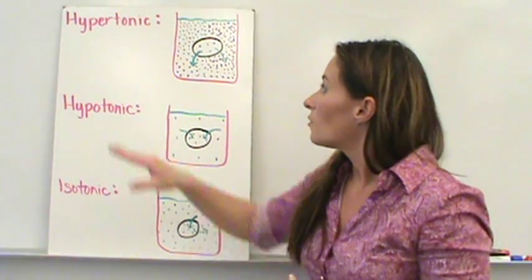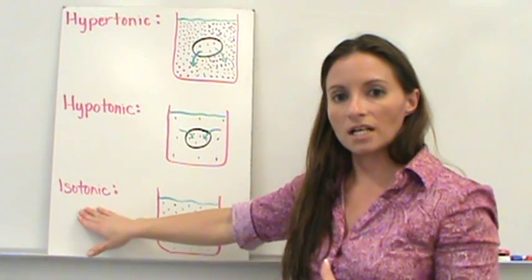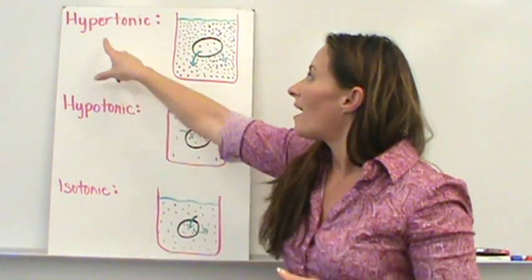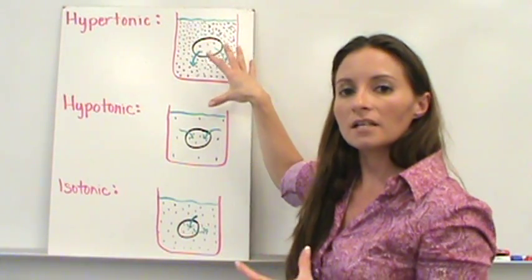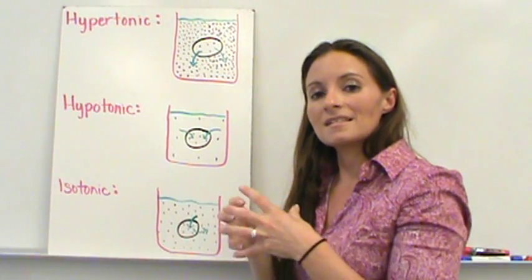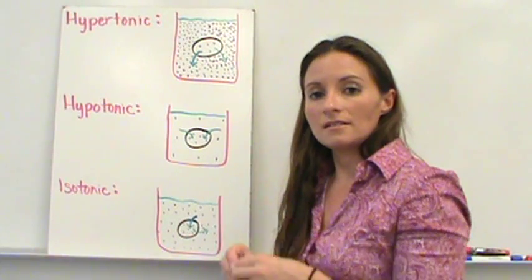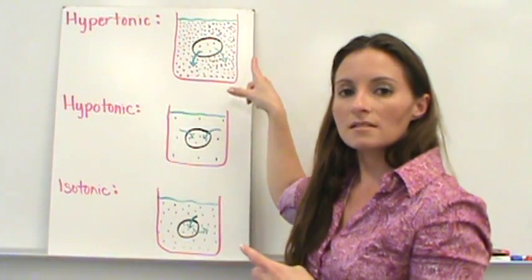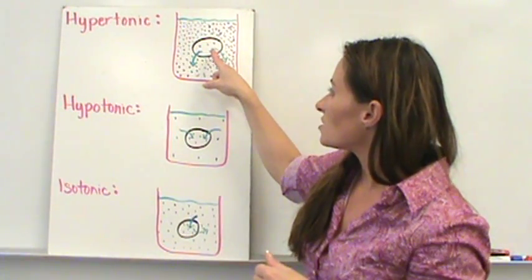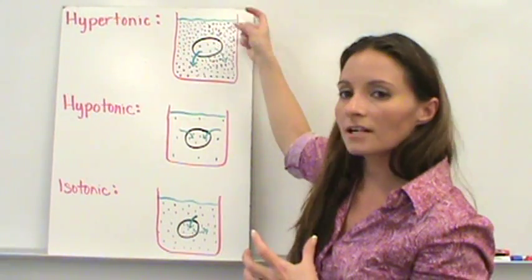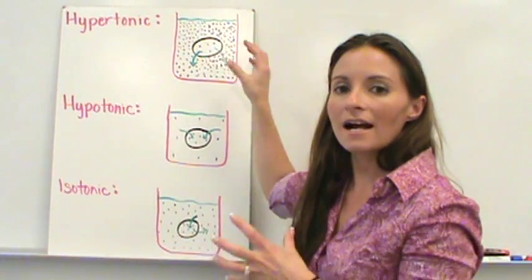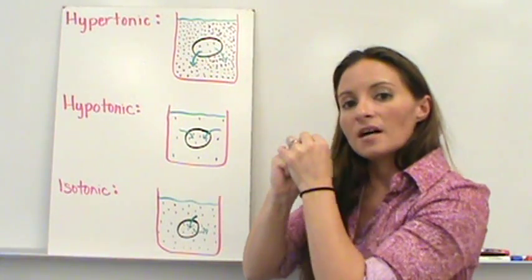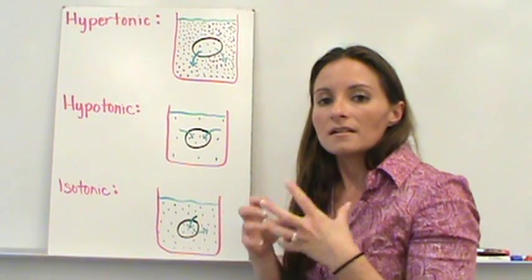Let's talk about the three types of solutions: hypertonic, hypotonic, and isotonic. Hyper means more — over the top. A hypertonic solution means the cell is in a liquid that has more dissolved minerals outside than inside the cell. There's a higher concentration of water inside the cell and a higher concentration of solutes outside, so water is going to want to move out of the cell to equalize concentrations. The cell will shrink in a hypertonic solution, which causes issues for the cell.